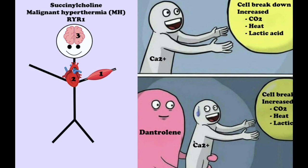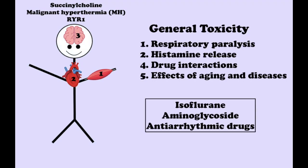As vascular smooth muscle and cardiac muscle are not primarily dependent on calcium release for contraction, they are not usually affected. Regarding general toxicity of neuromuscular blockers: first, respiratory paralysis — a full dose of neuromuscular blockers leads directly to respiratory paralysis, and if mechanical ventilation is not provided, the patient will asphyxiate. Second, histamine release — tubocurarine and mivacurium, both withdrawn in the United States, are the most likely agents to cause histamine release, but it may also occur to a slight extent with atracurium and succinylcholine.